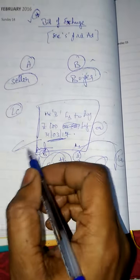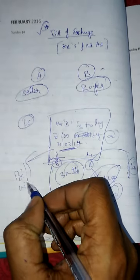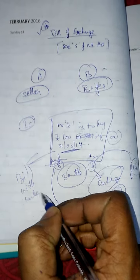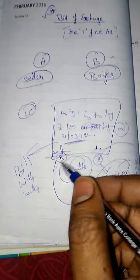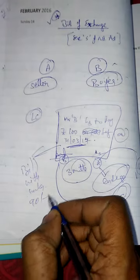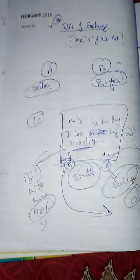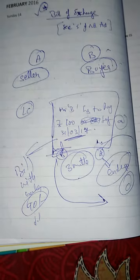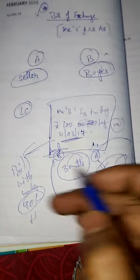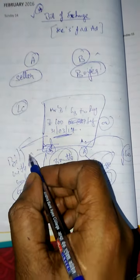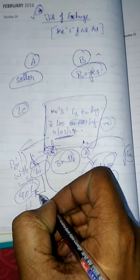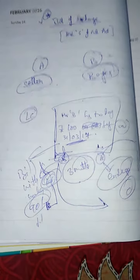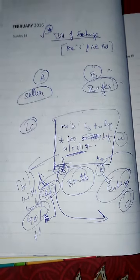Another option available to A is to discount this bill with the banker — that is, endorsing this bill in the name of his banker. The bill amount is 100, so the banker pays him around 90 rupees after deducting the commission. The bill is then with the banker. On the due date, payment from B goes to the banker. The banker receives 100, adjusts the 90 to his loan account, and passes the remaining 10 rupees to Mr. A.